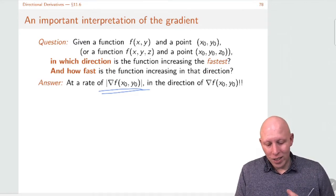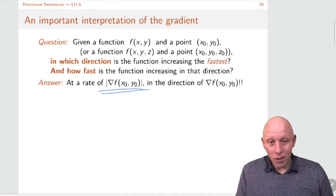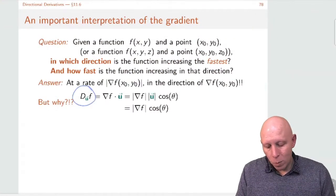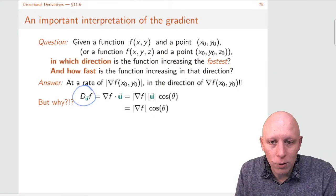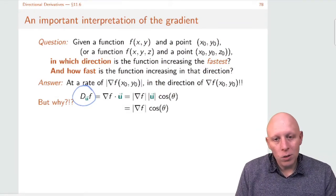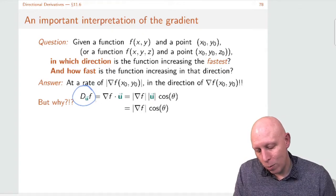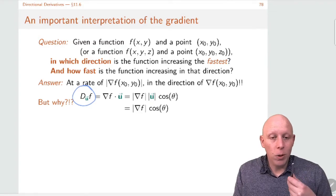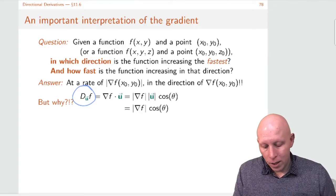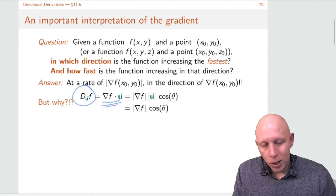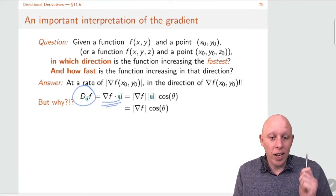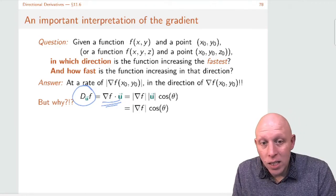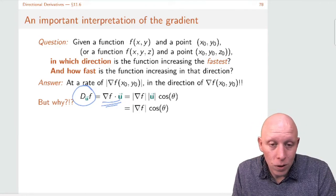Which I think is just amazing. So let's figure out why this is the case. Why is this the case? Let's go back to our friend the directional derivative. The directional derivative says: what is the rate at which the function is changing if we walk in the u direction? And earlier what we did is we saw that we can calculate the directional derivative by taking the gradient vector and dotting it with the unit vector u.